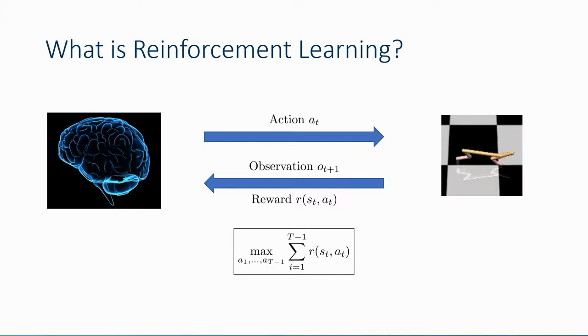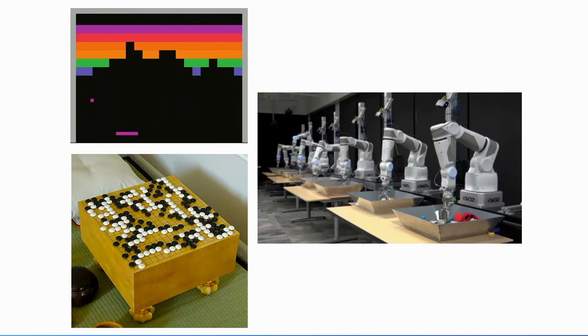So why is this useful? It's quite difficult to specify how exactly we want to do a task — what sequence of actions we need to take. But it's much easier to specify how we want the world to look after completing the task. Reinforcement learning lets us simply specify the reward function, and then it's up to the agent to find the sequence of actions that will solve your task. RL has been successfully applied to several domains, including video games, board games, as well as real robotic environments.